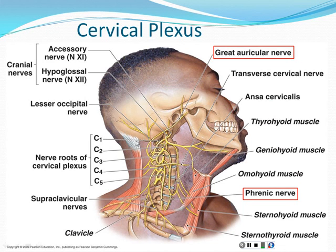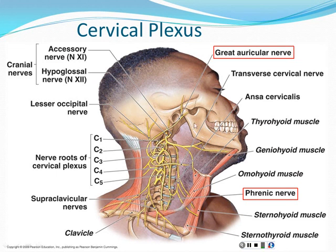Looking at the cervical plexus, you can see spinal nerves C1 through C5 emerging from the spinal cord. These spinal nerves start mixing together, coming together and then splitting apart — that's what we mean by a plexus, a network or complex pattern of nerves.